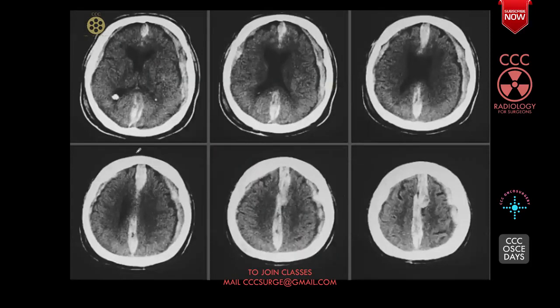Here you can see a concavoconvex hyperdensity extra-axial and hyperdensities along the interhemispheric falx — this is subdural hematoma.